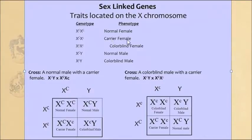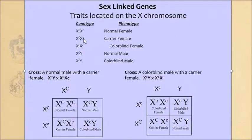Next up, we have something called a carrier female. This female has a capital C dominant on one X chromosome and a lowercase recessive c on the other X chromosome — that's what we call heterozygous, two different alleles. Her phenotype will actually be normal; she will not have colorblindness. But we call her a carrier because she's carrying a mutation — the recessive gene. It doesn't show up because she has the dominant to mask it, but she does carry it and has the ability to pass it down to her offspring.